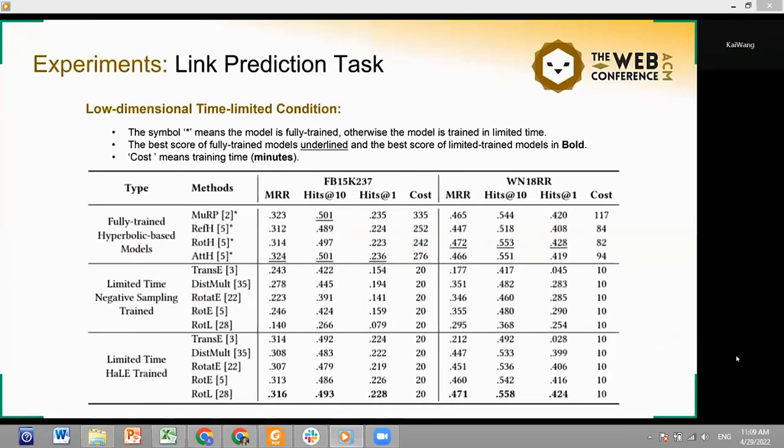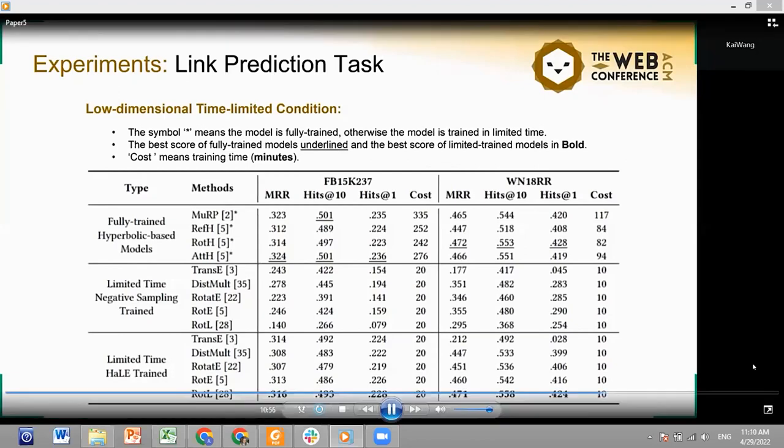In the experimental results, first in the link prediction experiments in low-dimensional space and time-limited condition, we trained five different KGE models using negative sampling loss and our HEAL loss respectively. For the FB15K237 dataset, the training time is 20 minutes, and for the WN18RR dataset, the training time is 10 minutes. From the experimental results, we can find that the KGE model trained by HEAL can achieve significantly higher prediction accuracy than those using negative sampling loss in the limited time. Compared with fully trained state-of-the-art low-dimensional KGE models, the limited time performance of HEAL trained models is even competitive to them.